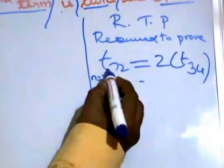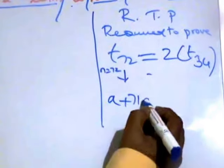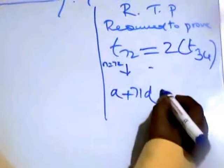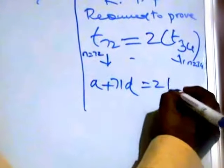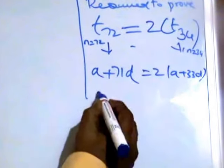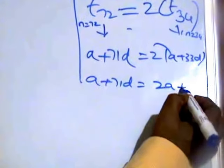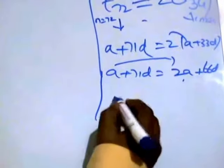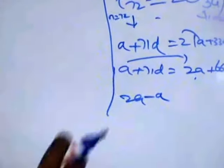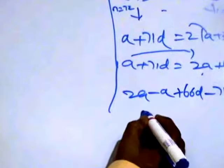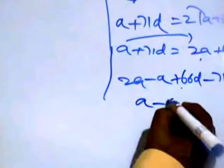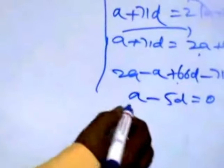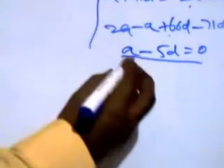Take all to one side: 2a minus a, plus 66d minus 71d, equals 0. That gives a minus 5d equals 0. So what you have to prove is a minus 5d equals 0 — required to prove. Now we go to the given statement.